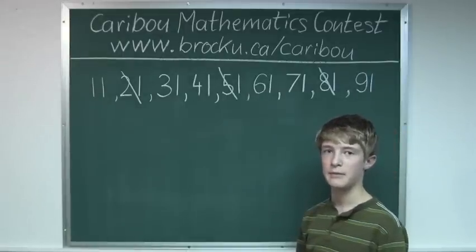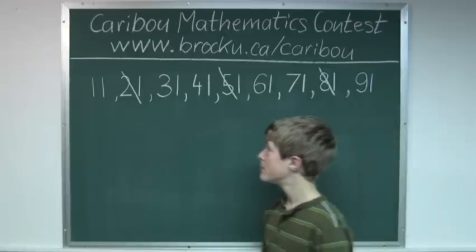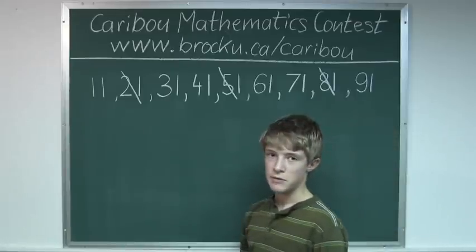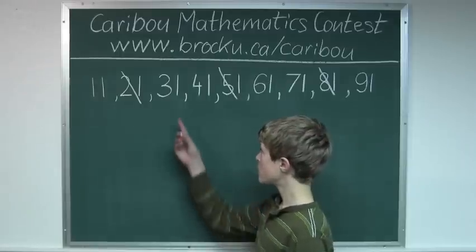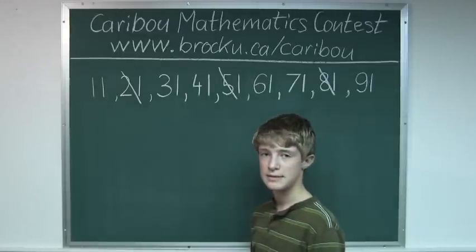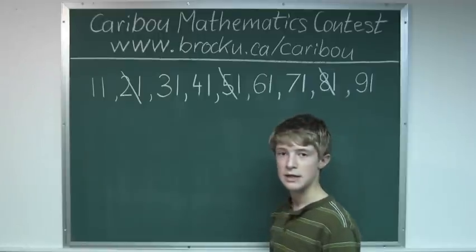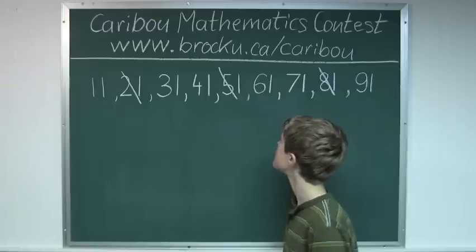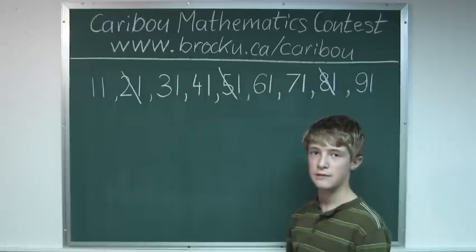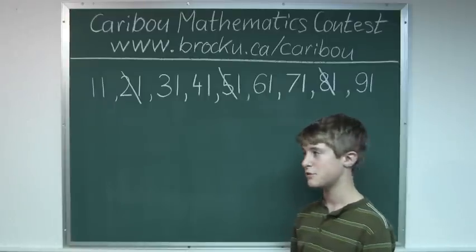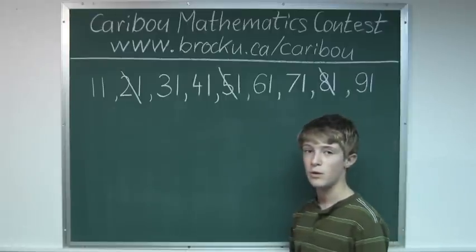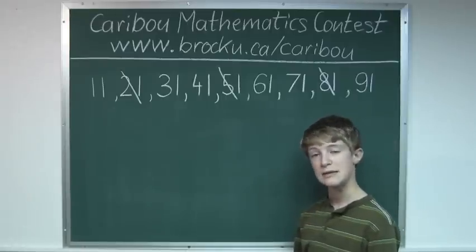Now the next prime number is seven. Eleven is not divisible by seven. Thirty-one is not divisible by seven, because thirty-five is. Forty-one is not divisible by seven, because forty-two is. Sixty-one is not divisible by seven, because sixty-three is. Seventy-one is not divisible by seven, because seventy is.